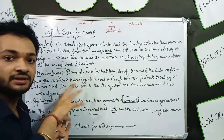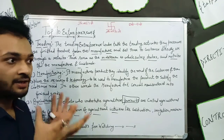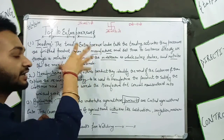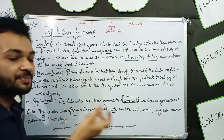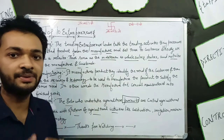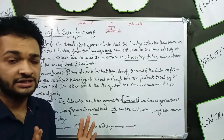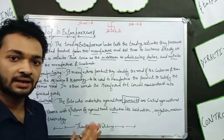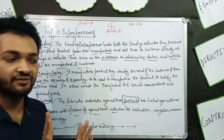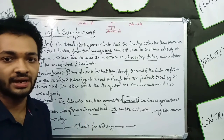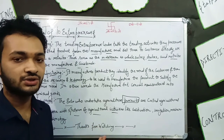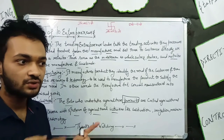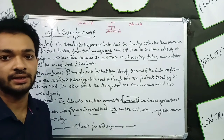And once the manufacturing entrepreneur converts it into a finished good, that finished good becomes the raw material for the trading entrepreneur. The trading entrepreneur simply purchases it and maintains it as stock — inventory. Then they convert the stock into cash by selling it to customers.